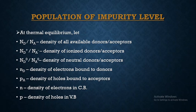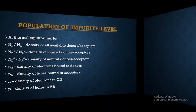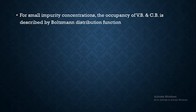N_d, N_d⁺, and N_d⁰ are the relevant quantities for explaining the population of the donor level in n-type, whereas N_a, N_a⁻, and N_a⁰ apply to the acceptor level. We are going to consider small impurity concentrations, taking the example of non-degenerate semiconductors where there are very few impurities added.